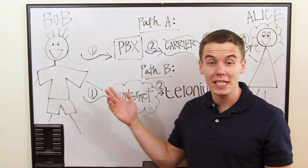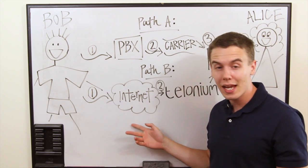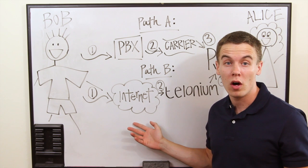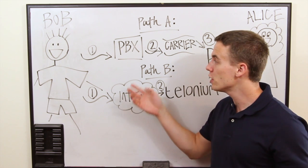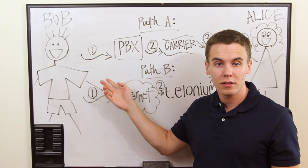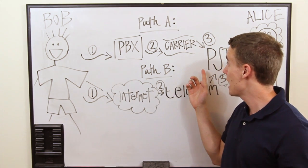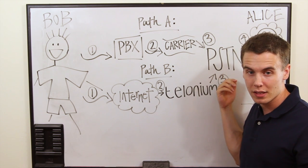Our first diagram is a picture of how you would make a phone call to someone using an analog system, and the second is a picture of how you would make a phone call using VoIP. In the first picture, you see Bob making a call to Alice. First, his call is routed through the analog PBX, then through to his carrier, then through the PSTN, to Alice.